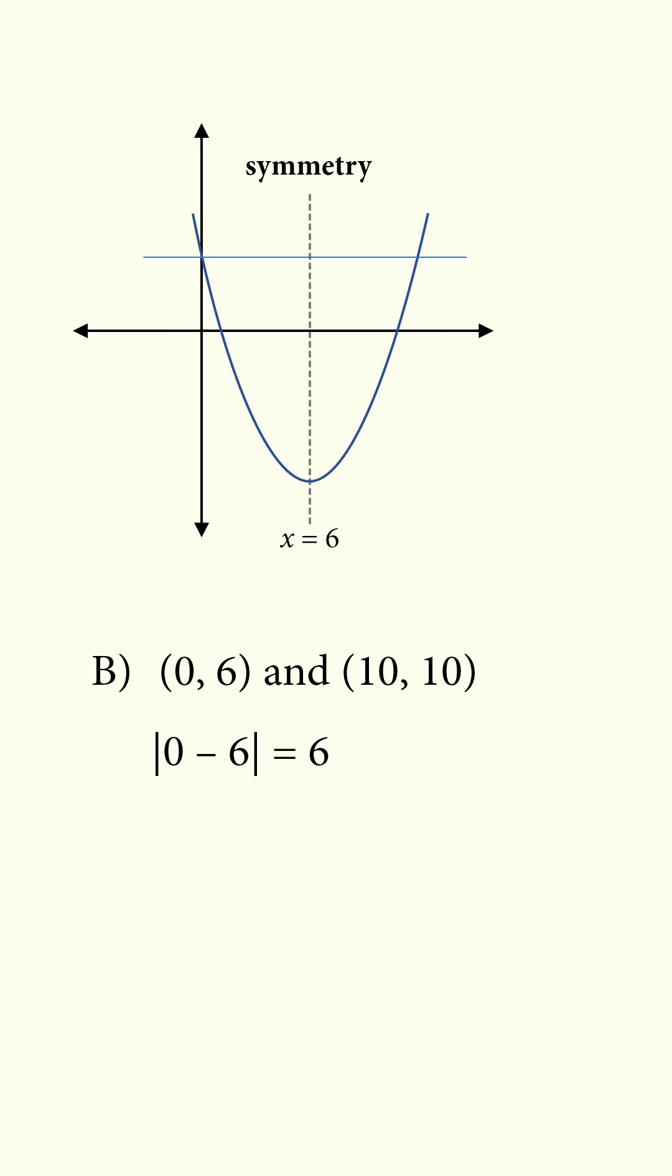In answer choice B, since (0, 6) is a point, we would expect (12, 6) to also be a point. Therefore, the point where x = 10 would have a y coordinate that's less than 6.